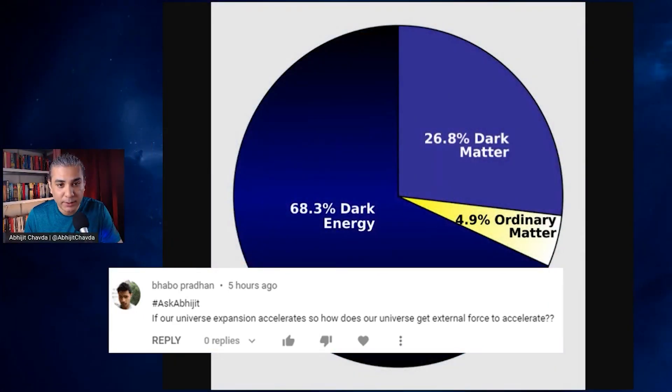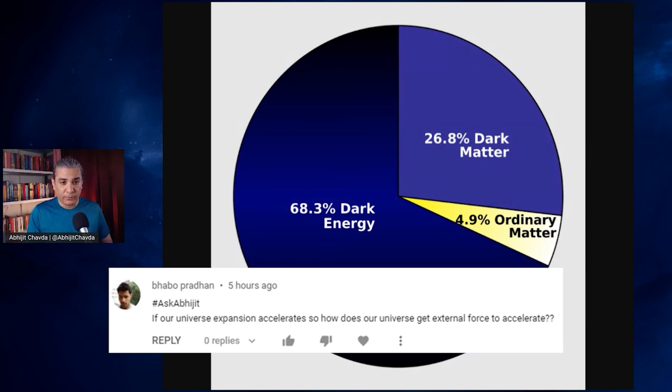The answer lies in what we call dark energy. Looking at this pie chart, about 68 — almost 70 — percent of the mass-energy content of the universe is dark energy. We don't know what this is, but we know it functions as a kind of repulsive gravity, like an anti-gravity force.